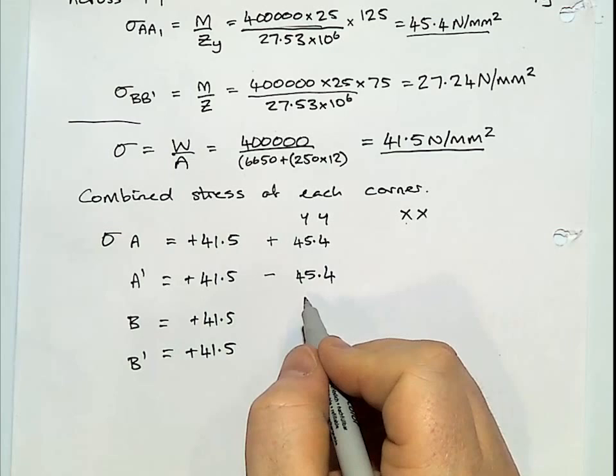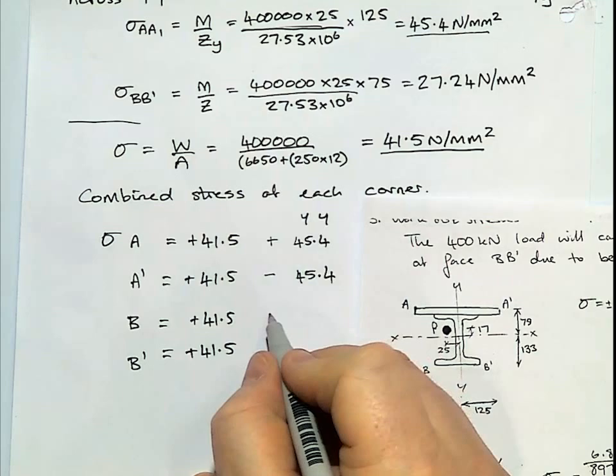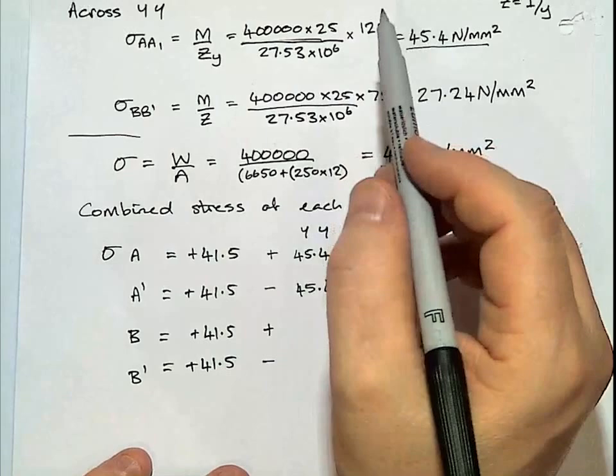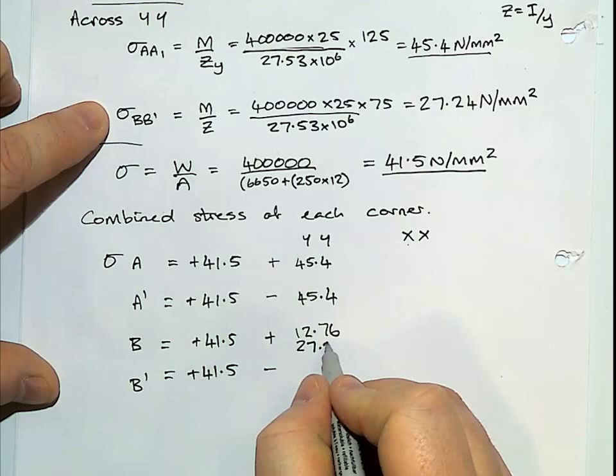Looking at our B, again, because the force is on this side, it will create a compression there on B. Compression plus and minus tension. So our stress at B, B dash was 12.76. No, it wasn't. 27.24.